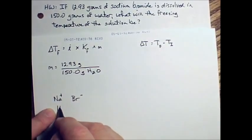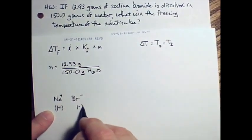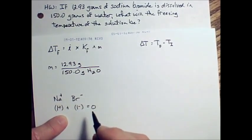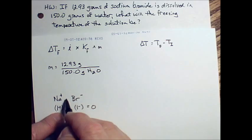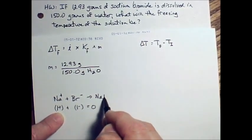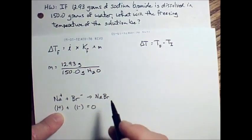Well, since I have a one-plus here and a one-negative here, these particles are going to add together to give me a zero charge overall. So what I need is a one-to-one ratio. So the formula then comes out to be NaBr. And that's sodium bromide.